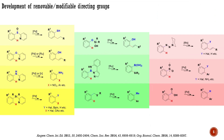The most important examples for aromatic systems are presented here and described in the review articles below. As you can see, most of the removable or modifiable directing groups are based on pyridine connected to the main molecule by a carbon-heteroatom bond. Other interesting examples include silanols, protected boronic acids, and nitro compounds.